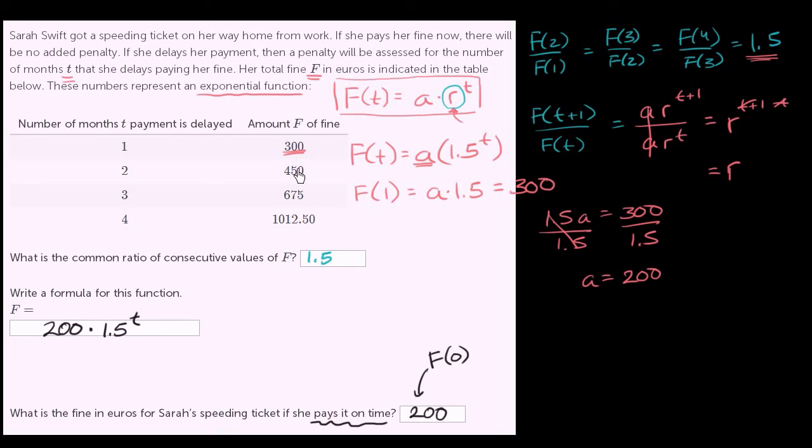Now another way of thinking about it is, well look, let's look at the common ratio. To go from 675 to 450, you're essentially dividing by the common ratio. To go from 450 to 300, you're dividing by the common ratio. So then to go from t equals 1 to t equals 0, you would divide by the common ratio again, and you would get to 200. Or another way of thinking about it is to go to successive values or successive months, every time we are multiplying by the common ratio.